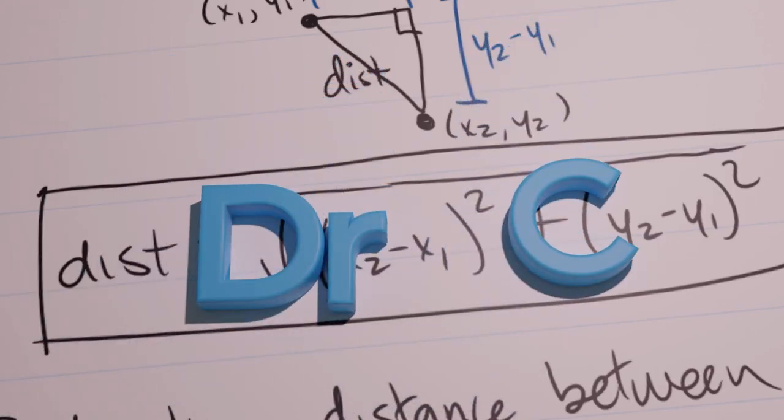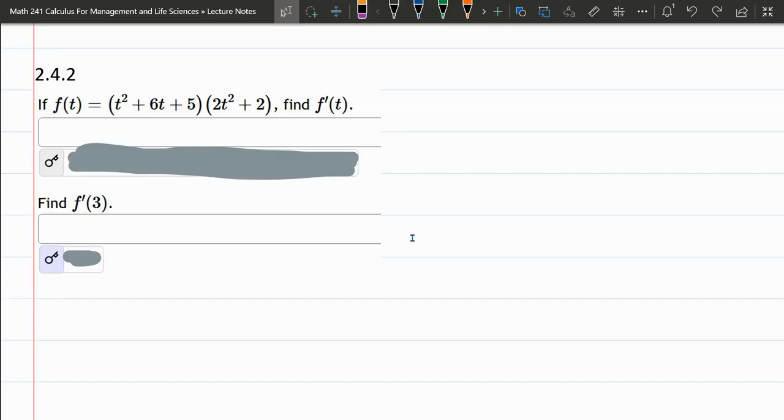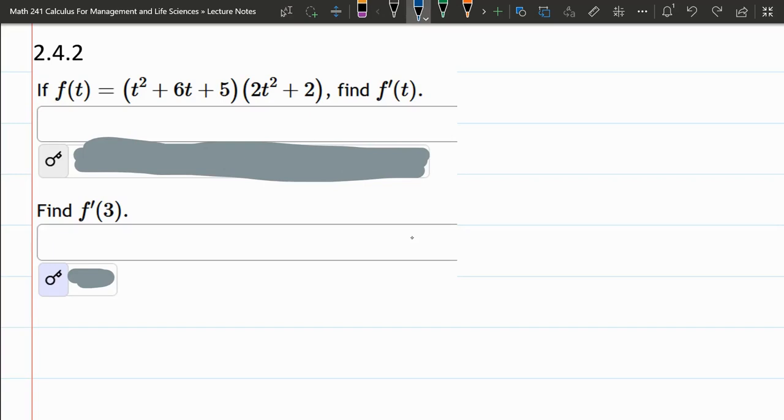We're going to compute a derivative here. This is from section 2.4, which is called the product and quotient rule, but how do we know that we're going to use a product rule here?